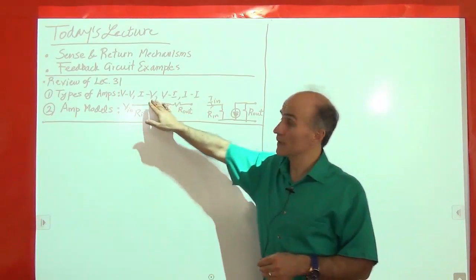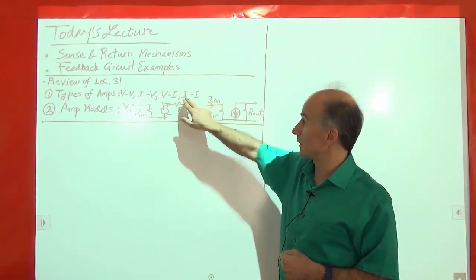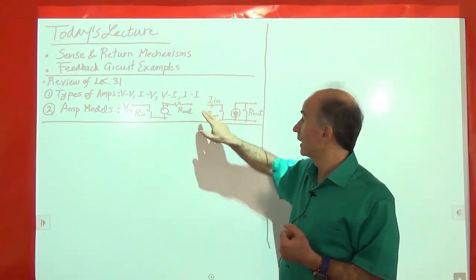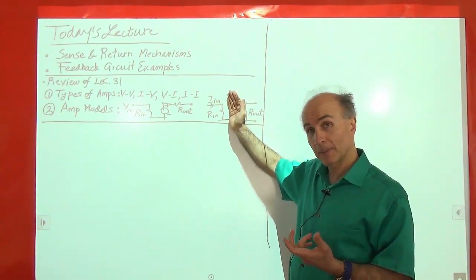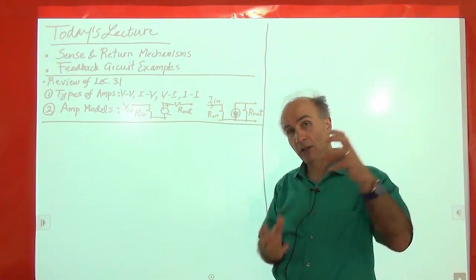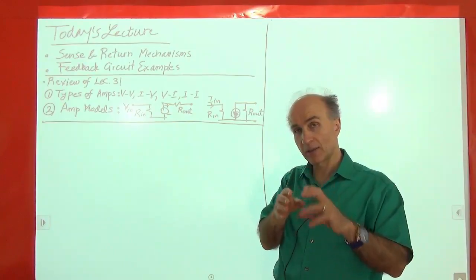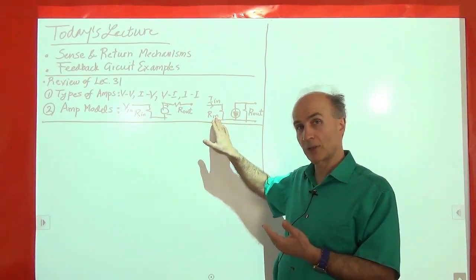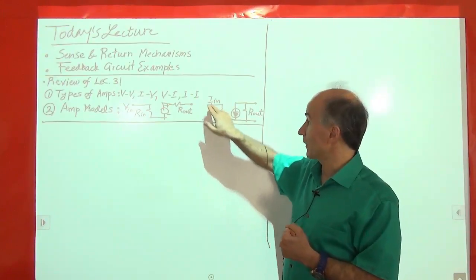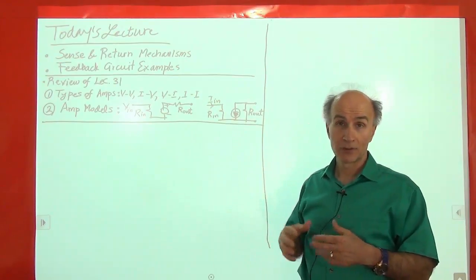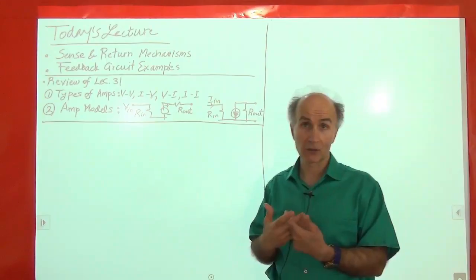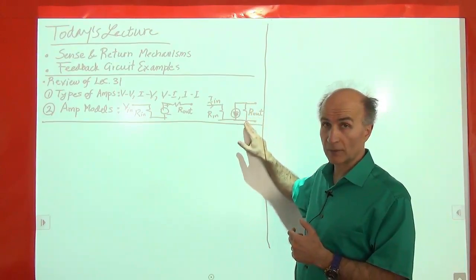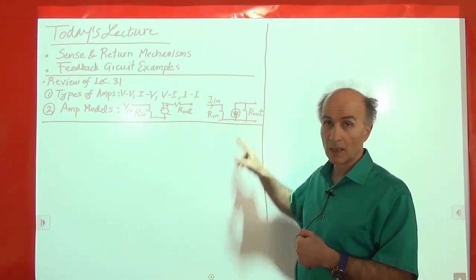For other topologies, similar considerations apply. If we consider a circuit that senses a current and wants to generate a current, for the input impedance we would like it to be zero ideally, because a circuit that measures a current has to cut a wire and be placed in series. We want that circuit not to disturb the preceding stage. As for the output, we want it to act as a good current source, so the output impedance should be high, modeled as a Norton equivalent.